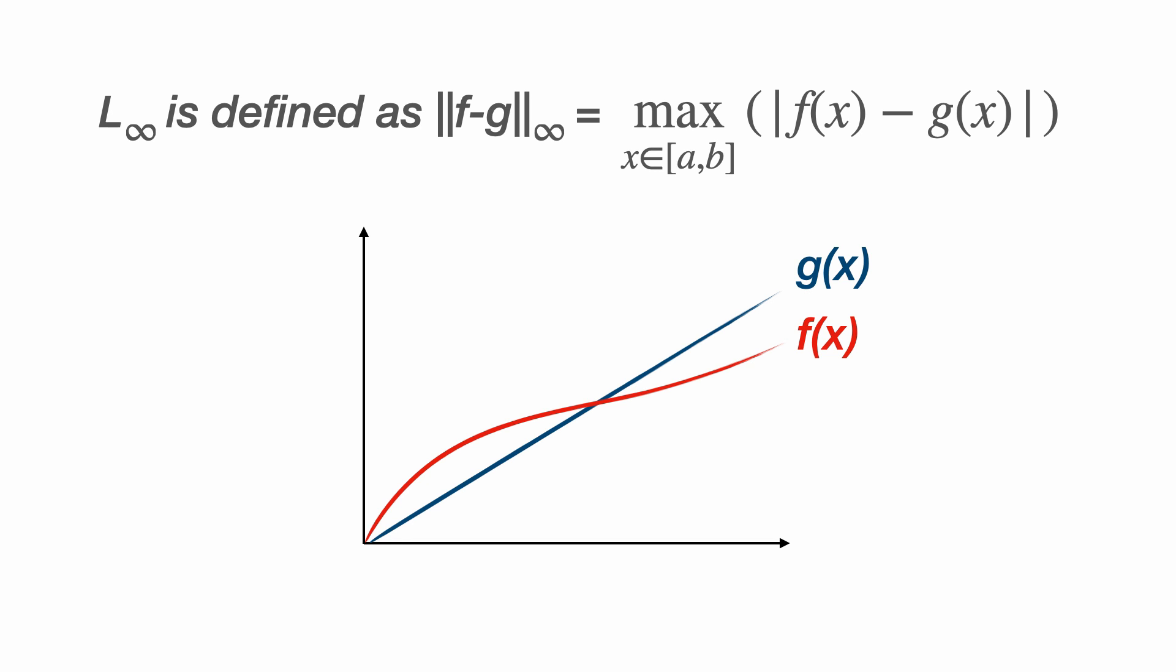It's hard to get a visual representation for what an Lp norm for continuous functions looks like when p is greater than 2. But I want to finish with the L infinity norm for functions.